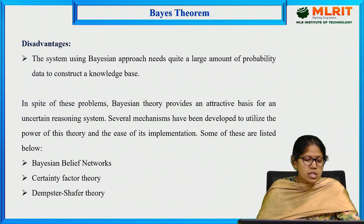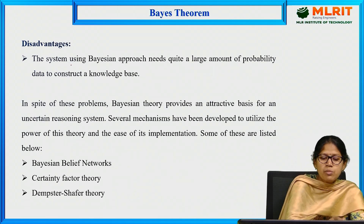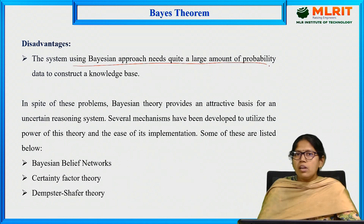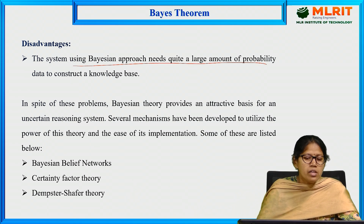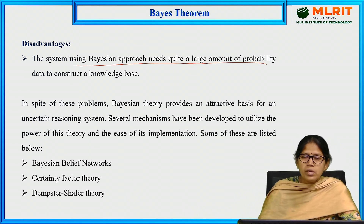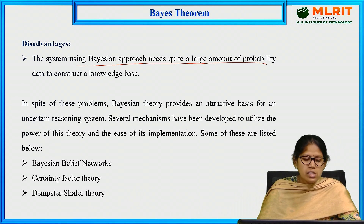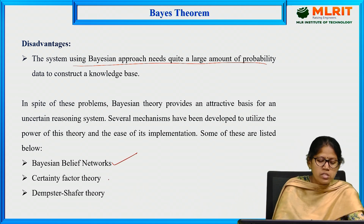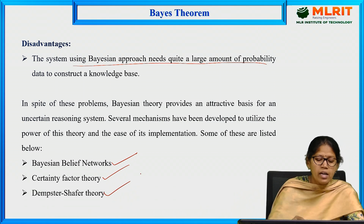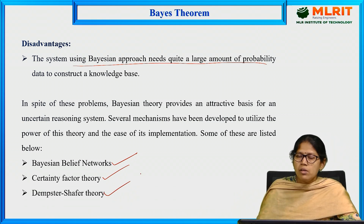The disadvantages: a system using the Bayesian approach needs a quite large amount of probability data to construct a knowledge base. In spite of this, we also have many advanced methods to find out uncertainty in knowledge. Some of them are Bayesian belief networks, certainty factor theory, and Dempster-Shafer theory. We will see these in the next sessions.